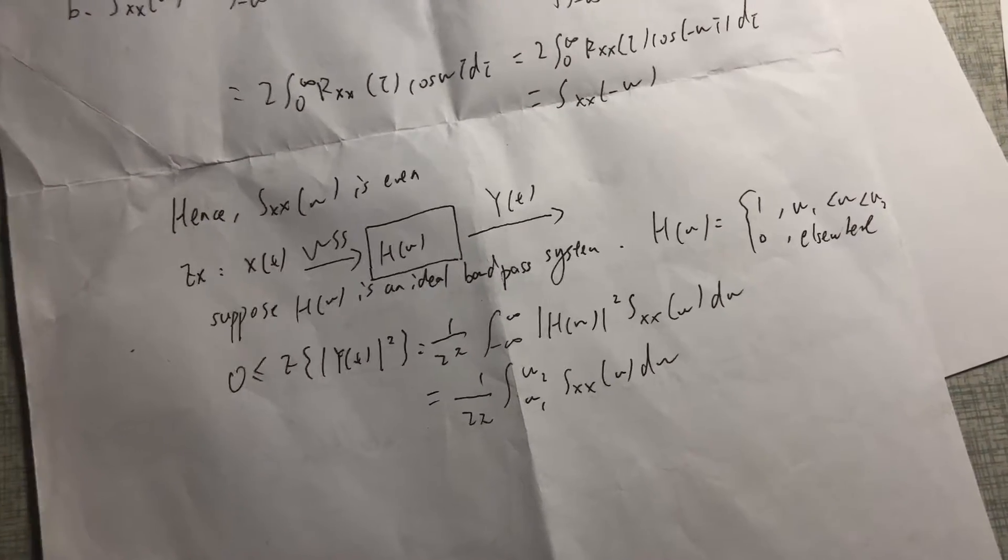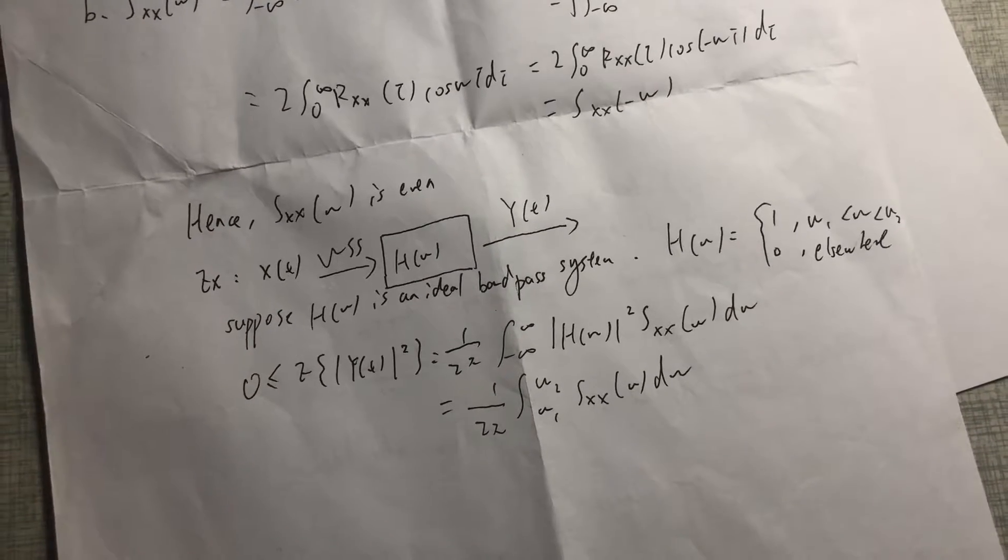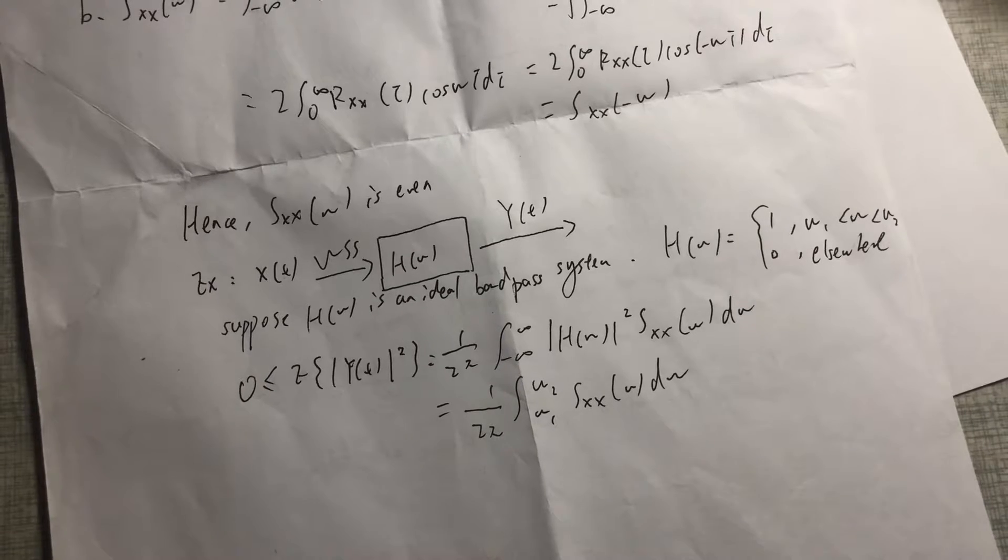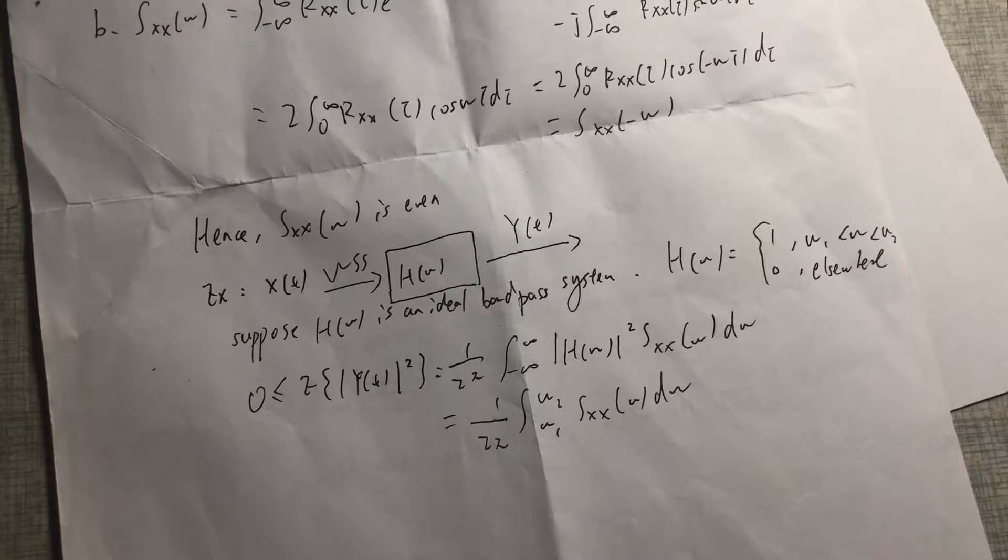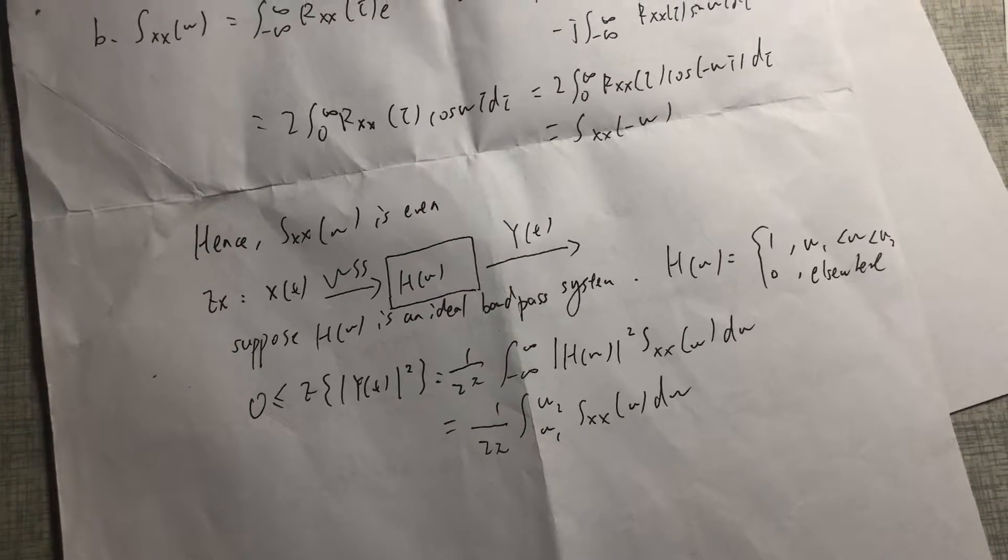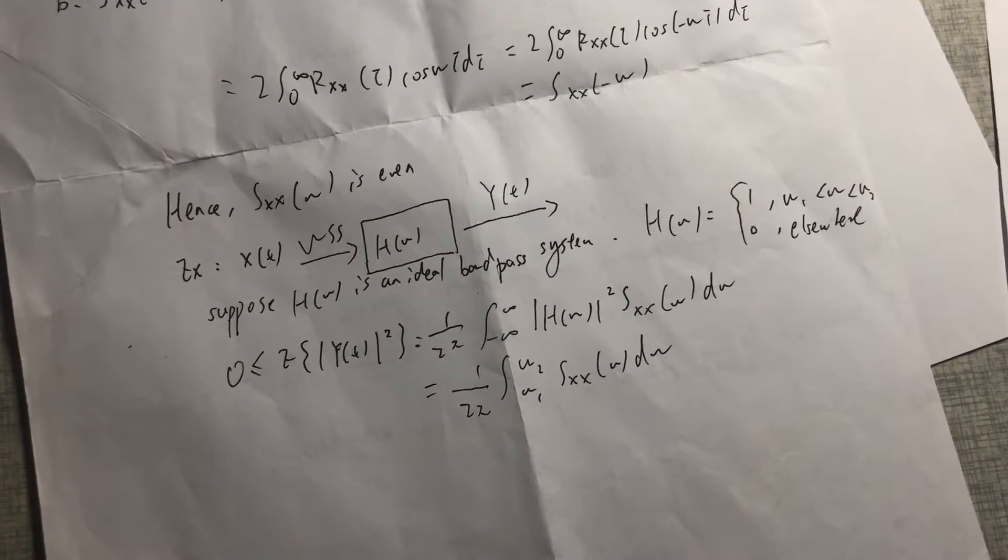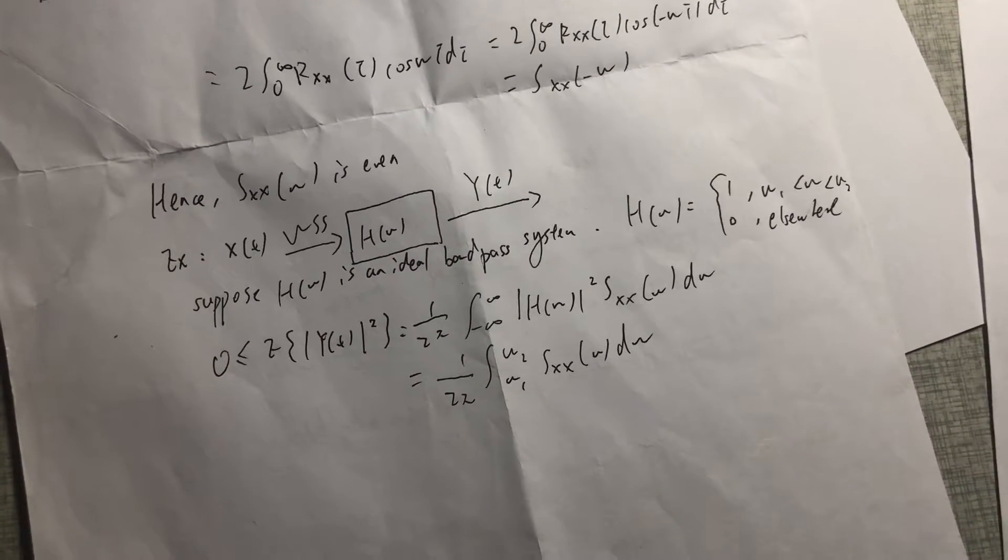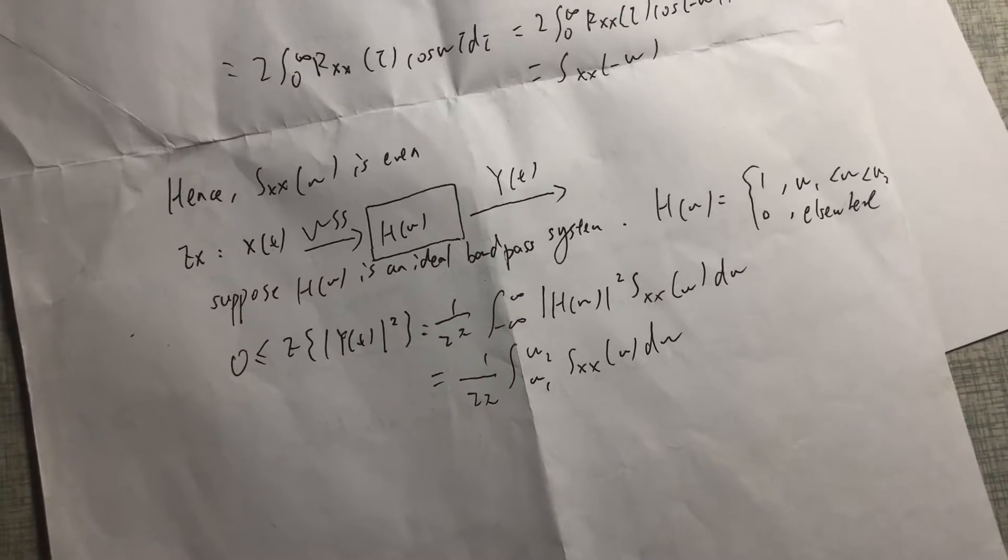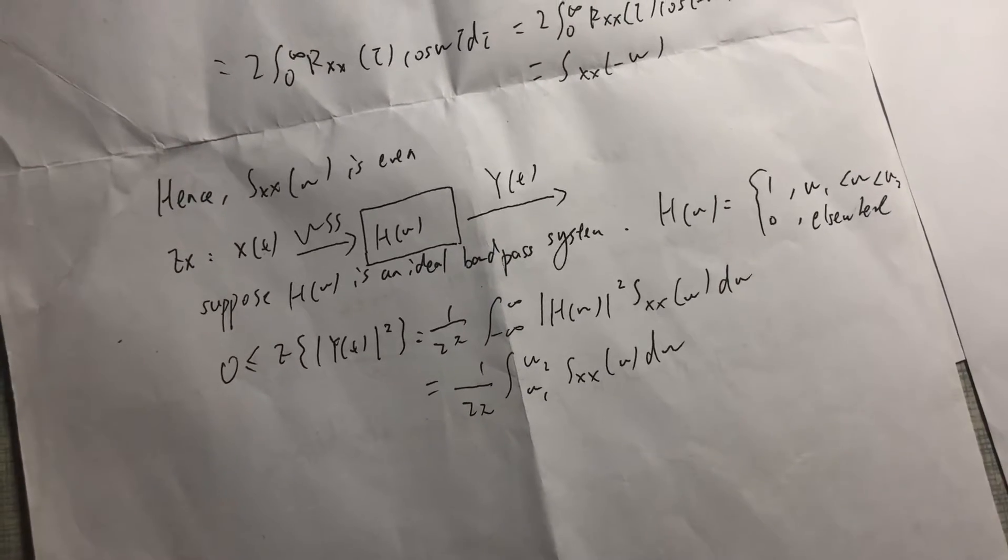For zero less than E[Y(t)²], we have E[Y(t)²] equals 1 over 2π times the integral from minus infinity to infinity of |H(ω)|² S_XX(ω)dω, which equals 1 over 2π times the integral from ω1 to ω2 of S_XX(ω)dω.